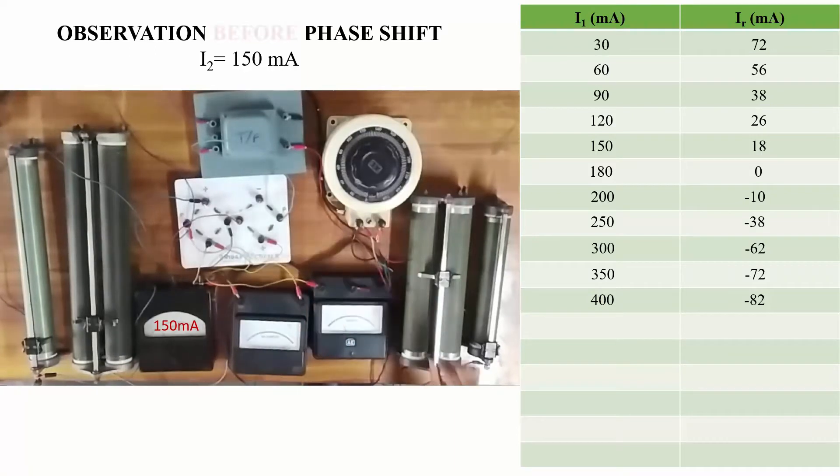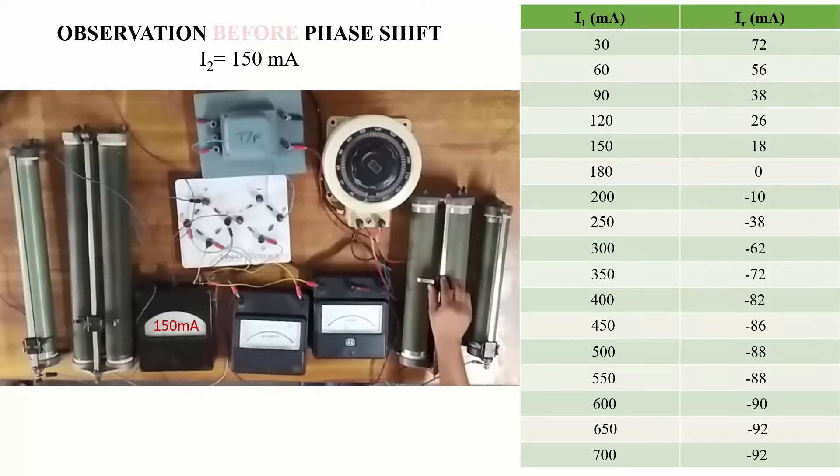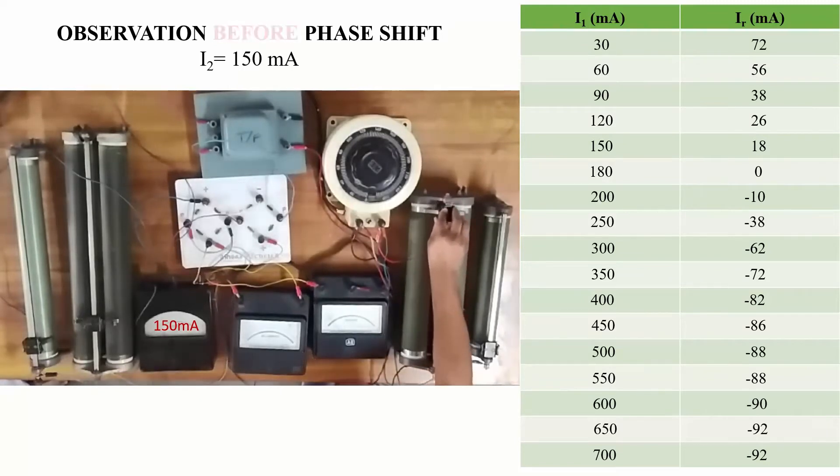Now we set the ammeter to higher range. In this manner we completed the experiment for IR corresponding to different values of I1.